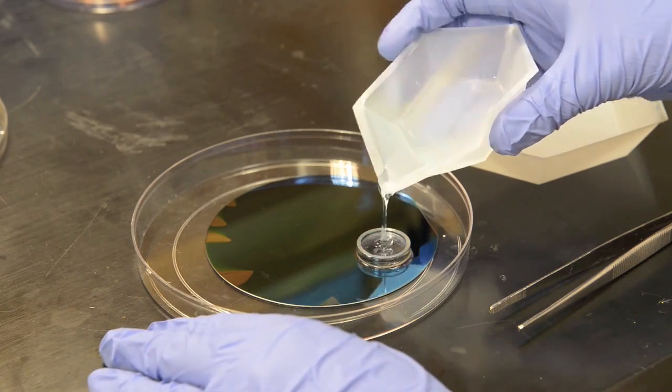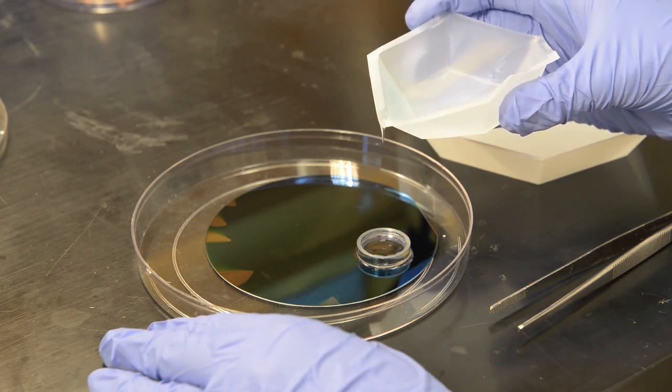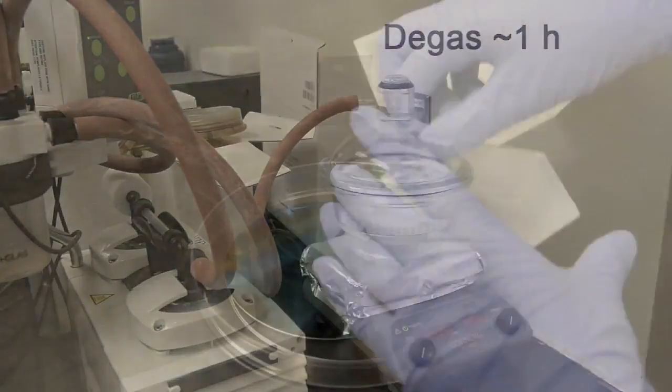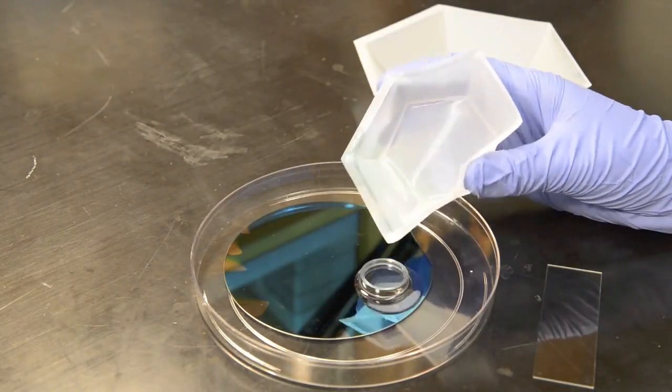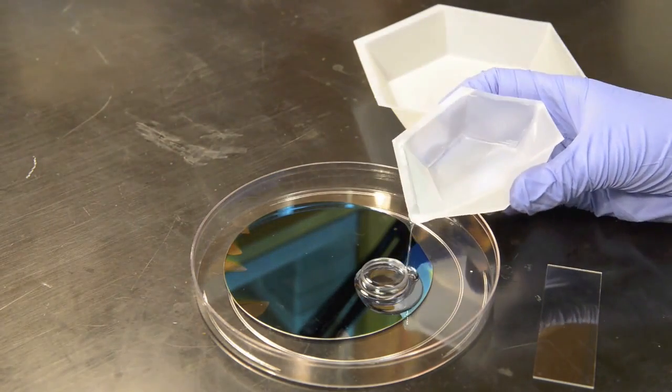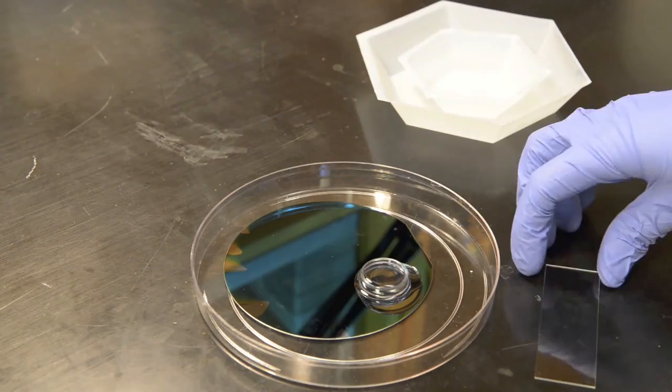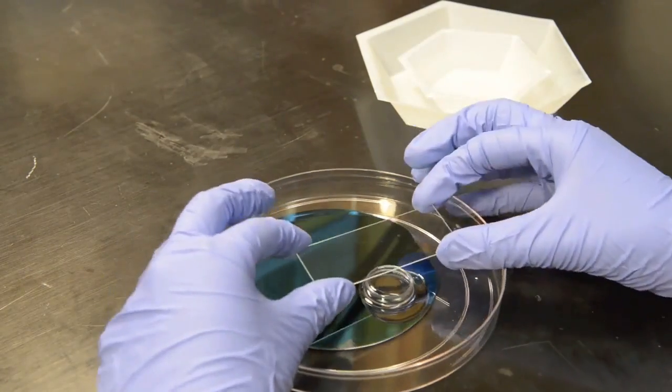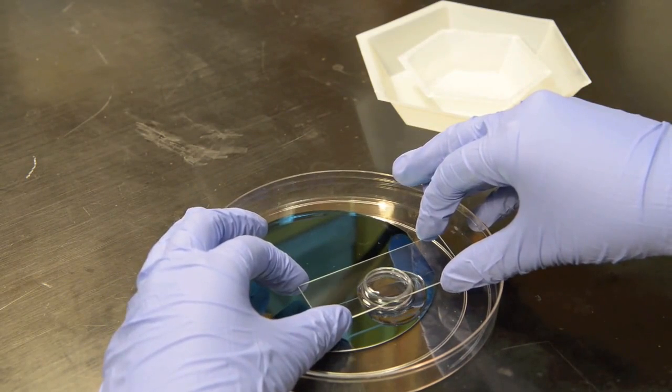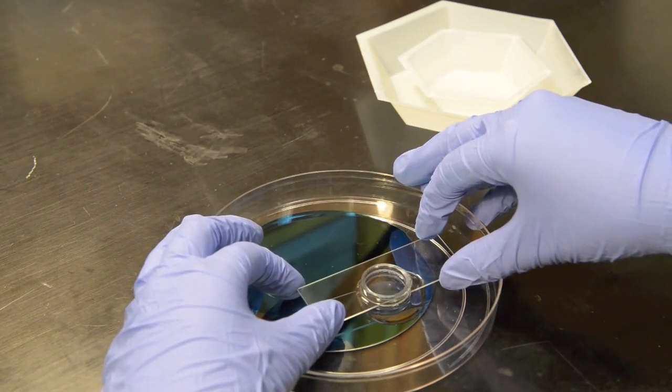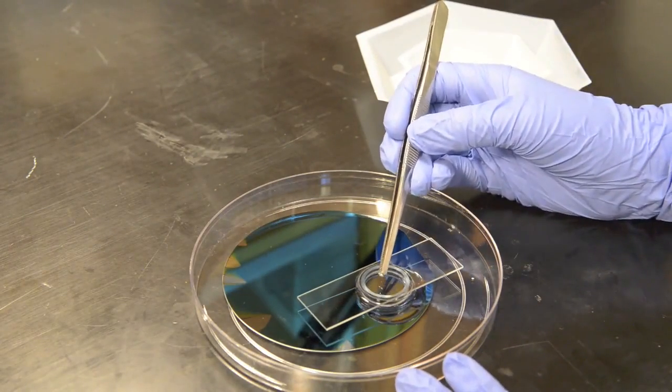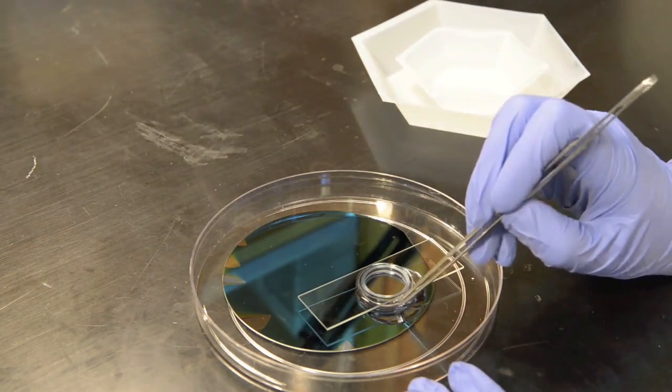Fill the ring with PDMS and return the assembly to the vacuum chamber to degas for 1 hour. Top the ring up with PDMS. Apply a clean glass slide as the backing to the stamp. Be sure not to incorporate any air bubbles. Final positioning adjustments can be made at this time.